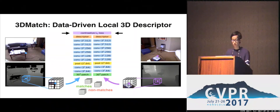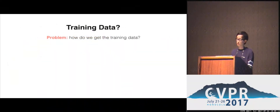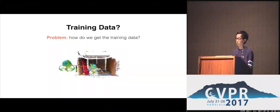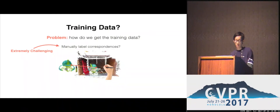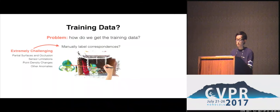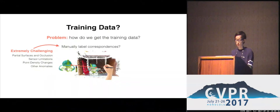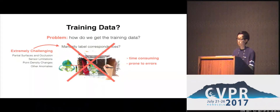One of the hardest challenges is the question: how do we get the training data? Training data comes in the form of ground truth correspondence labels between 3D scans. One possible way is to manually label correspondences with human effort. However, doing this on 3D point clouds is extremely challenging — all the difficulties that make this hard for algorithms also make it difficult for humans to label. Trying to click point-to-point correspondences between noisy 3D point clouds with missing regions and density changes is a complete nightmare. This process is not only hard and time-consuming, but also prone to errors, making it not a scalable solution.